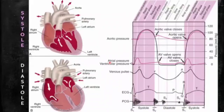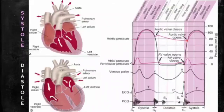As systole begins, ventricular contraction raises the pressure in the ventricles and forces the mitral and tricuspid valves closed, preventing back flow. This valve closure produces the first heart sound, S1. The intraventricular pressure rises until it exceeds that in the aorta and pulmonary artery; then the aortic and pulmonic valves are forced open and ejection of blood begins. When the ventricles are almost empty, pressure falls, allowing the aortic and pulmonic valves to close, causing the second heart sound, S2.